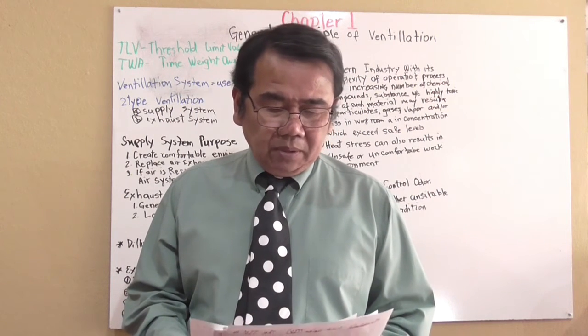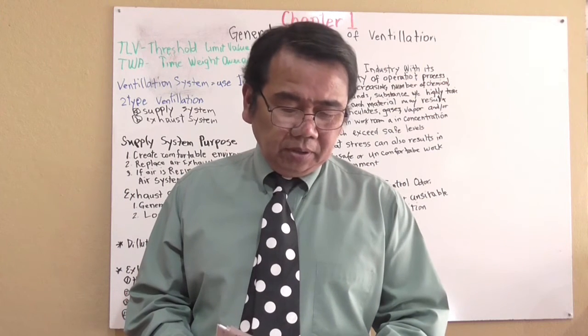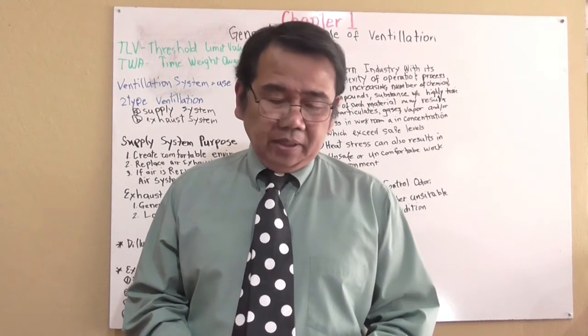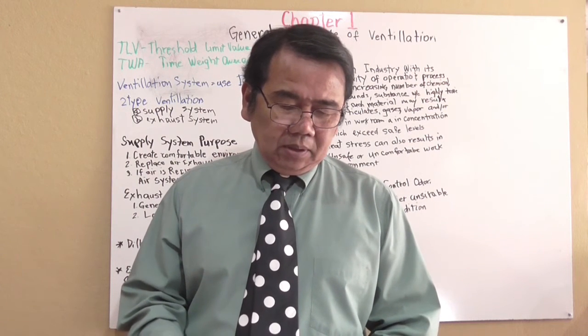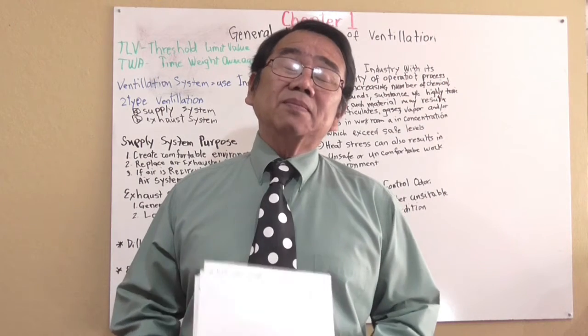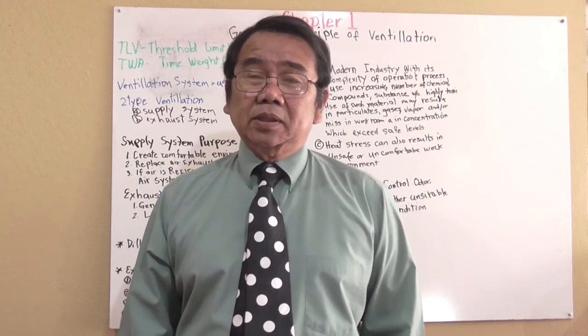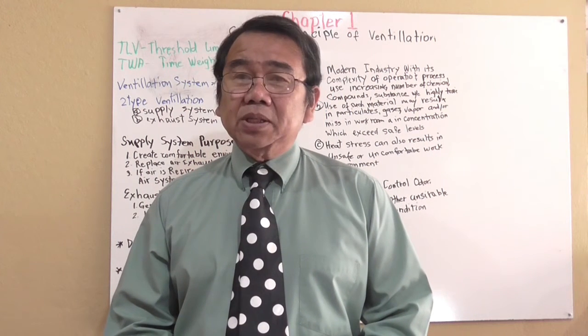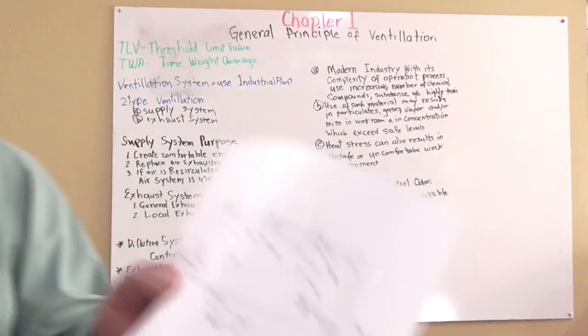Exhaust system has four elements: the hood, the duct system, the air cleaner, and the fan. Some examples of the sketches of the exhaust ventilation are given in this basic diagram that I made.